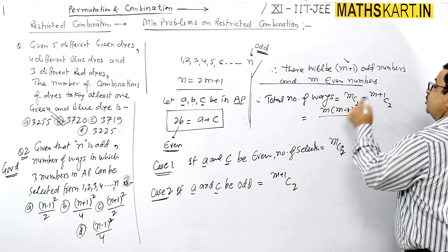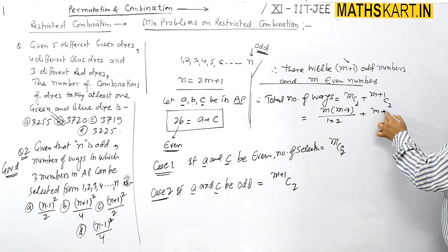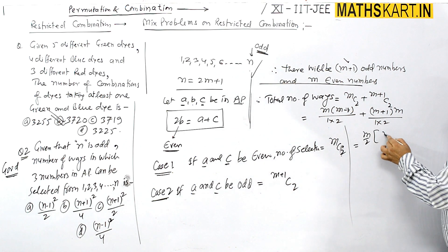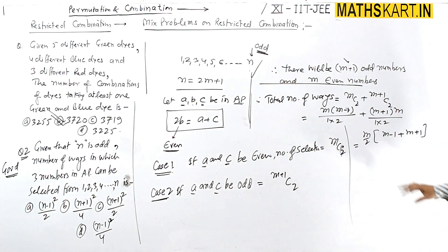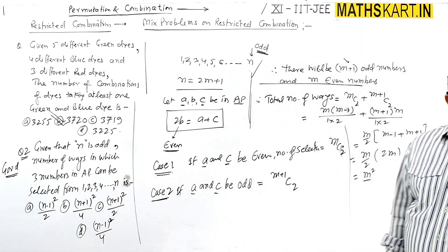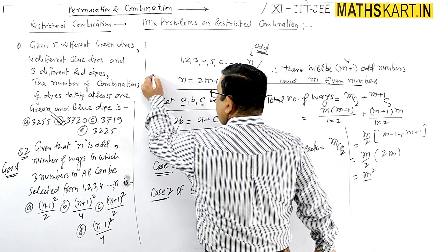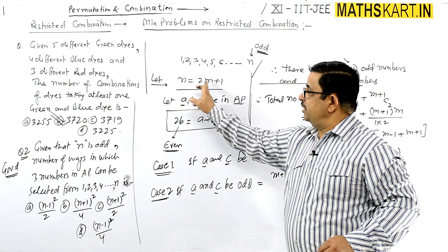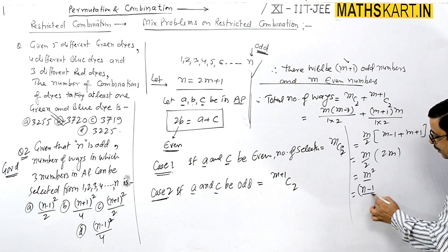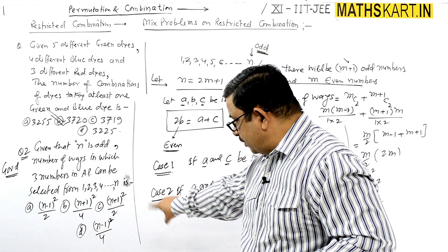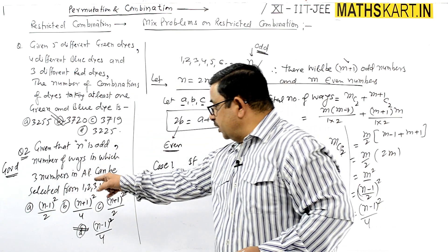Solving: mC2 = m(m−1)/2 and (m+1)C2 = (m+1)m/2. Taking m/2 as common: m/2 × [(m−1) + (m+1)] = m/2 × 2m = m². Now substituting m = (n−1)/2, we get m² = [(n−1)/2]² = (n−1)²/4.